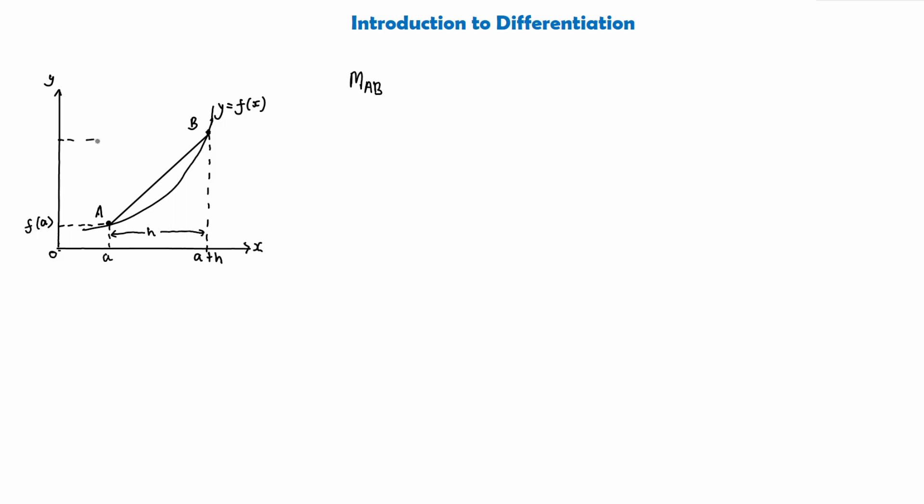We would also simply state that the y-value of B, similar to what we did down here, is going to be f(a + h). Now let's take a look at what the gradient of this line AB is going to be.